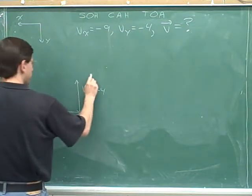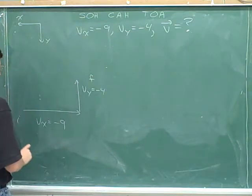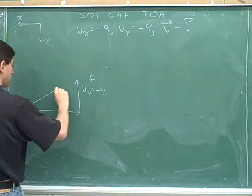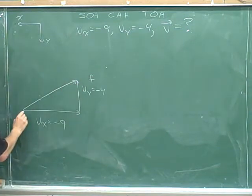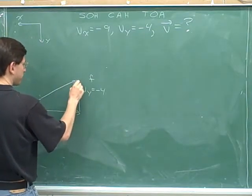Now we have to draw the overall vector. Well, the overall vector should begin at our initial point here and end up at this final point. This is the initial point because this is where the x component was pointing away from. And this is the final point because this is what the y component was pointing towards.